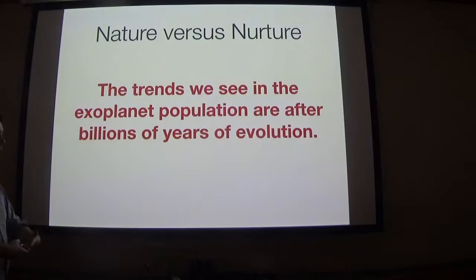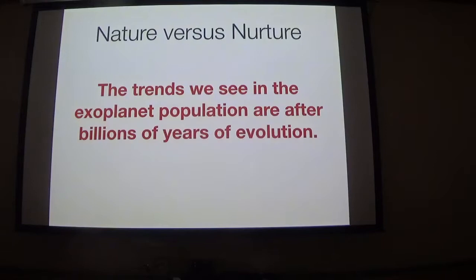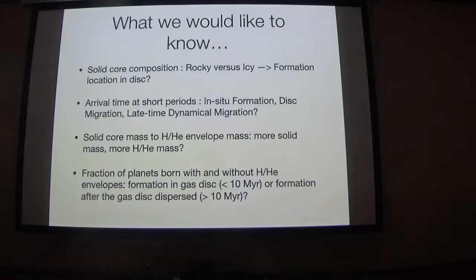The important question we still want to ask is: are the trends we see in the exoplanet population telling us something about formation — that planets with lots of hydrogen-helium can only form far away from the star — or is there something else that happened during those billions of years of evolution? To answer this, we'd like to know the composition of these solid cores: is it Earth-like, or rock with a large fraction of ice? This tells us something about where they may have formed in the disk.